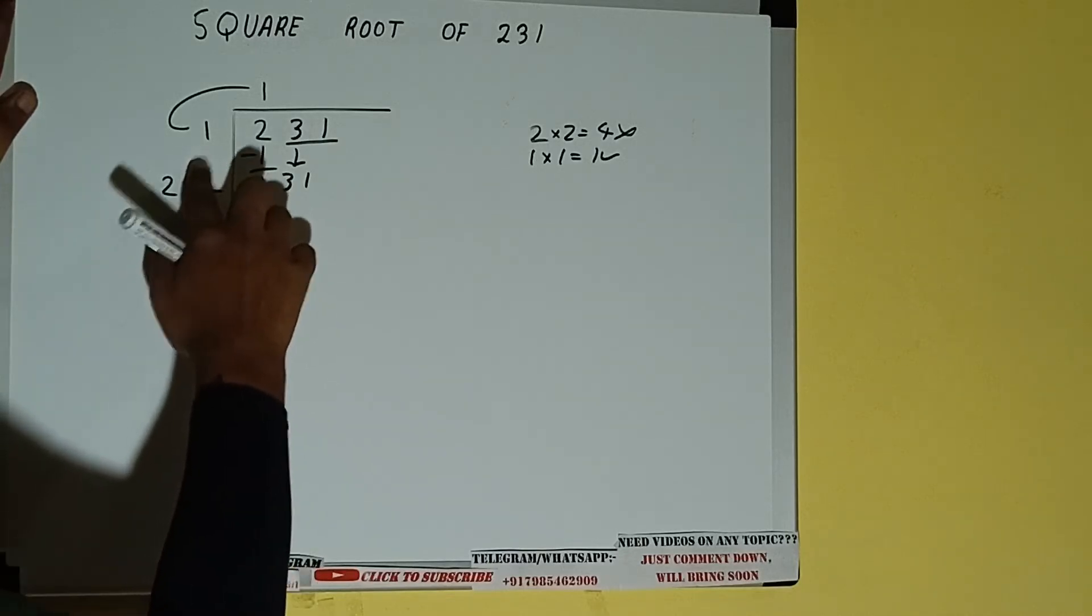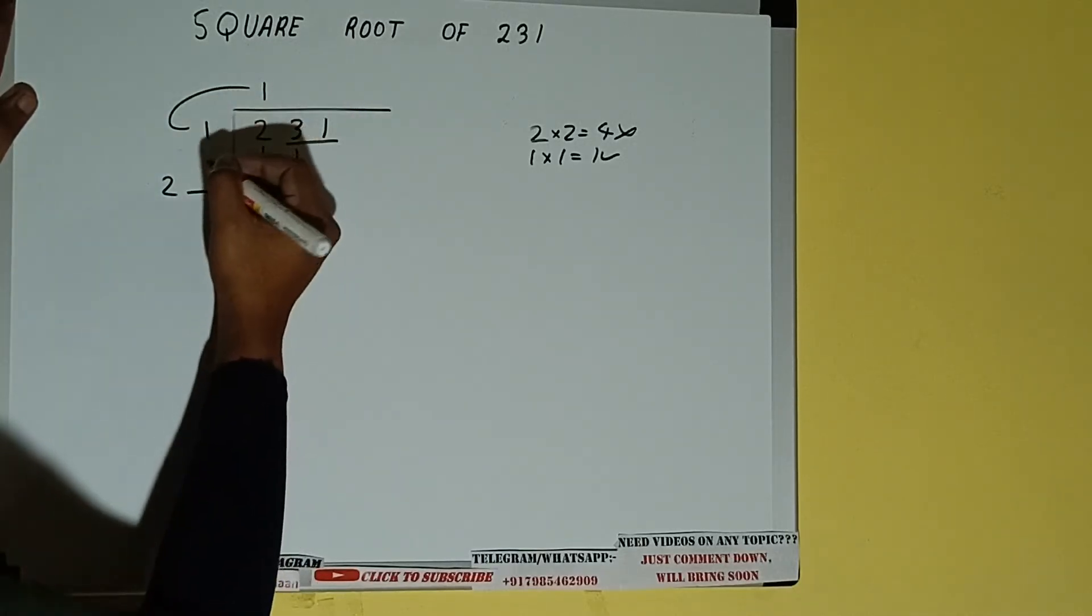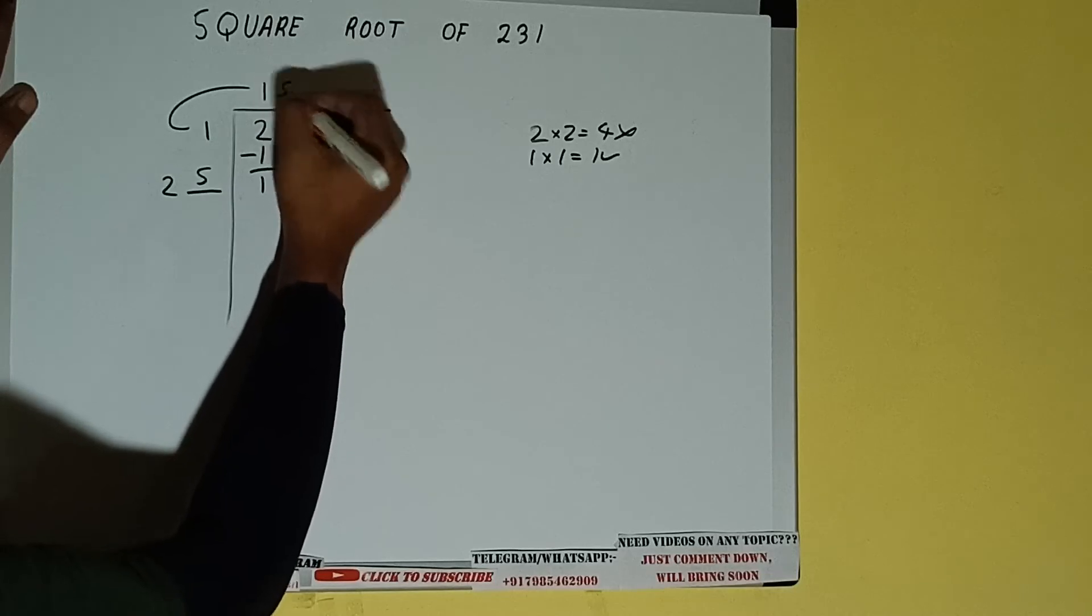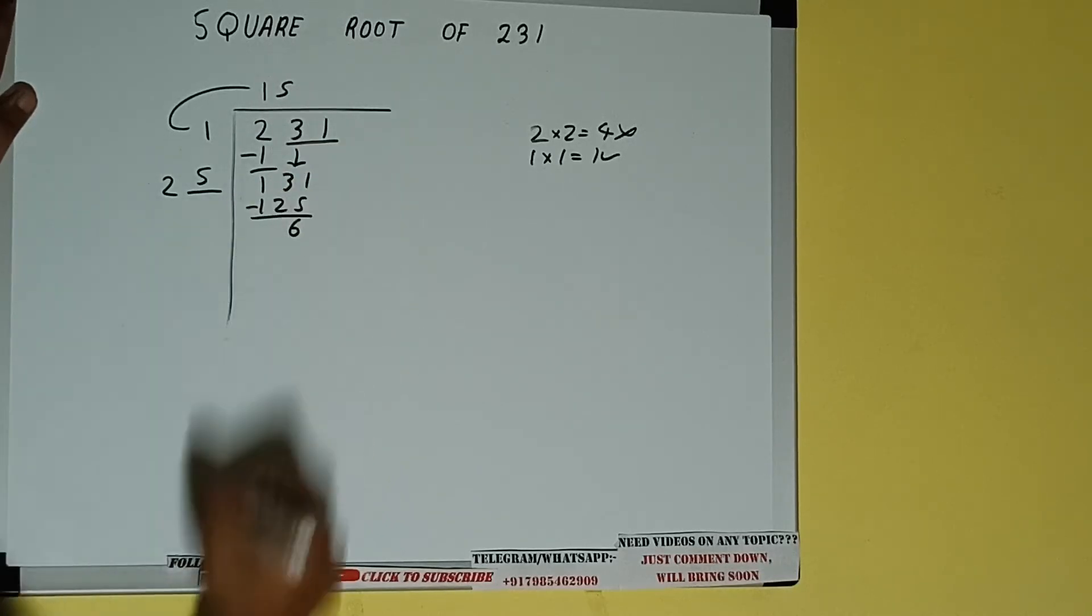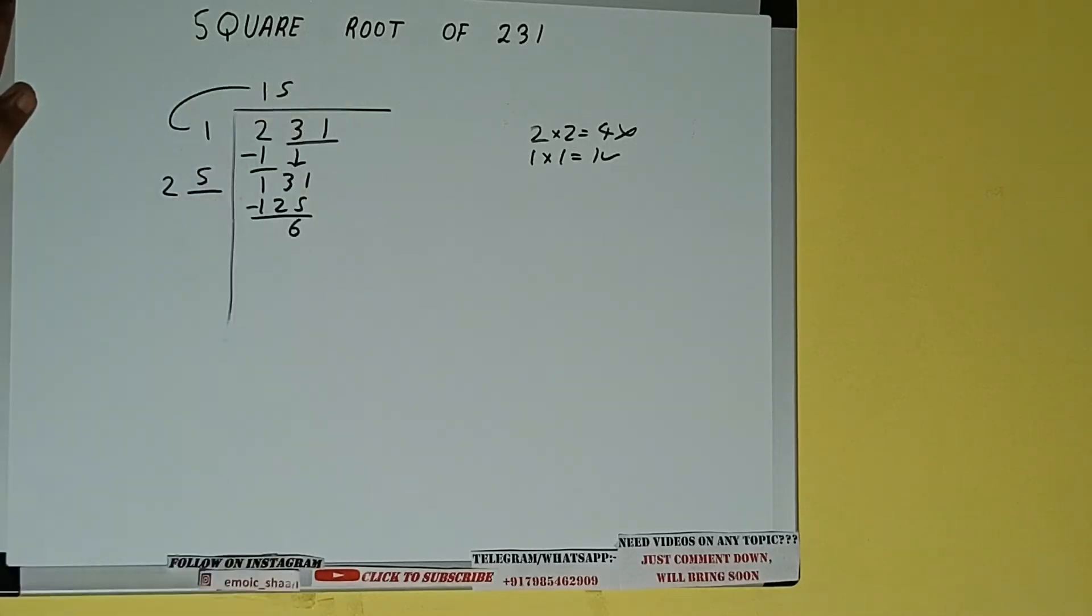Now whatever number we write here, we have to write here also. So if we write five here and five here, we'll be getting 125. Subtract, six will be left.